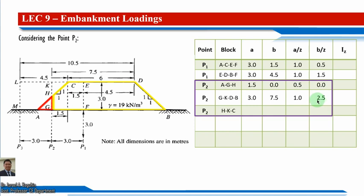For P3, MLDB with a/z = 1.0 and b/z = 3.5 gives I_z ≈ 0.50, and MACL with a/z = 1.0 and b/z = 0.5 gives I_z ≈ 0.39. We are now done with the influence factors and proceed to calculate the vertical stresses.